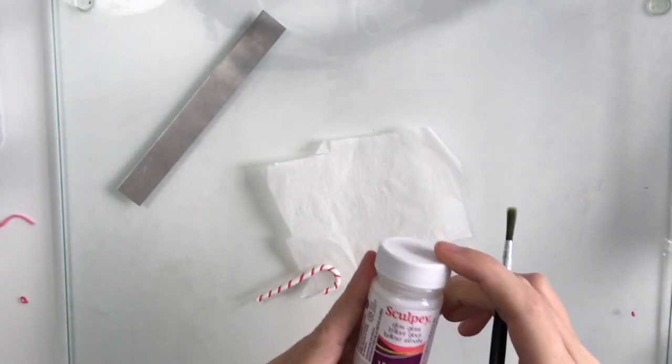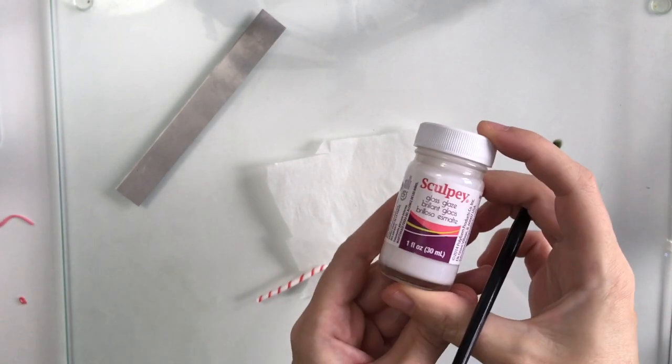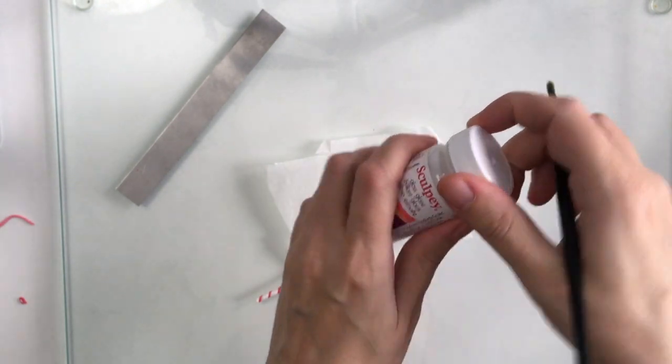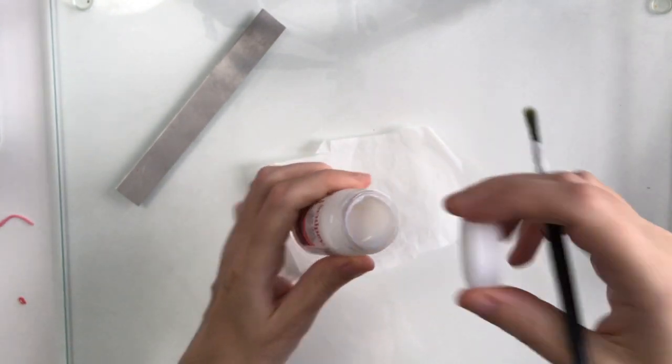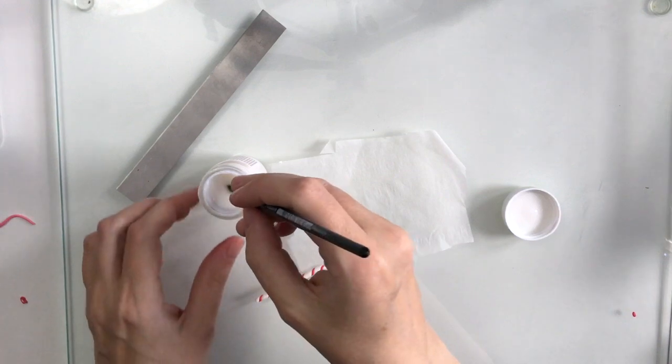Now it's time to bake your candy canes. You'll need to refer to your own brand of polymer clay's baking instructions. Once they're baked and cooled, I'd recommend adding some Sculpey glaze to your canes to create a more realistic effect.